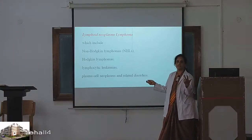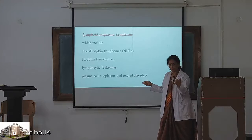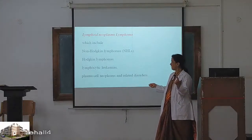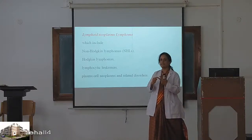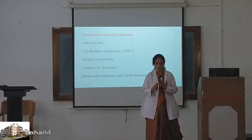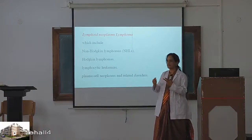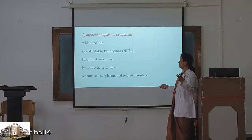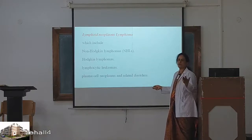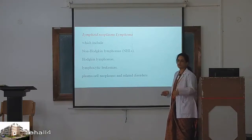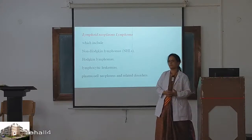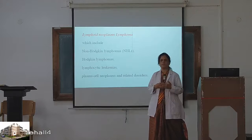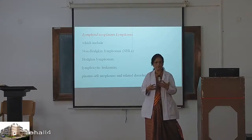So we have Hodgkin's lymphoma and non-Hodgkin's lymphoma. The third type is lymphocytic leukemia, which you have already learned. And the fourth is plasma cell neoplasm and related disorders. Do you know about plasma cells? You know about lymphocytes and their types — I will tell you later. At least B cells and T cells you have heard about or learned in first year.